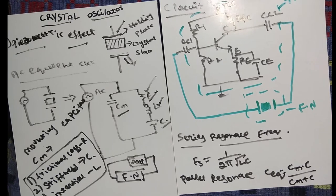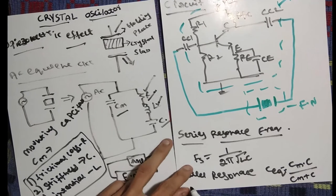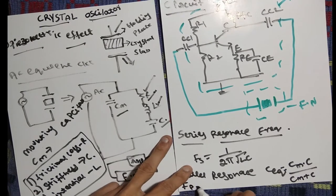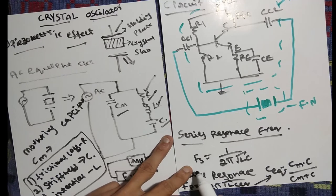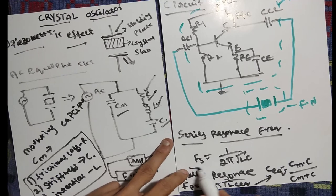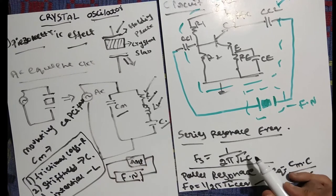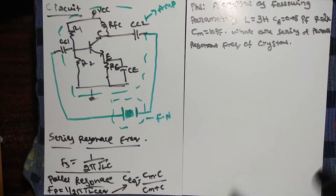Therefore, fp equals 1 divided by 2π√(L × C_equivalent), where C_equivalent is (Cm × C) / (Cm + C).